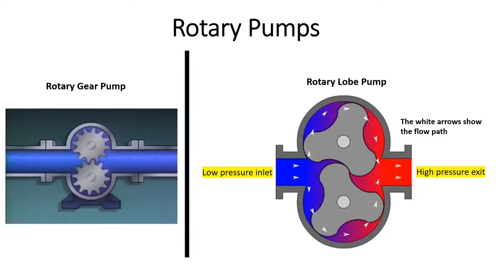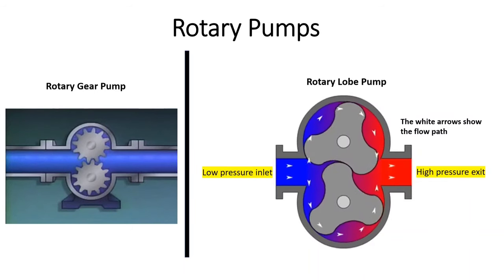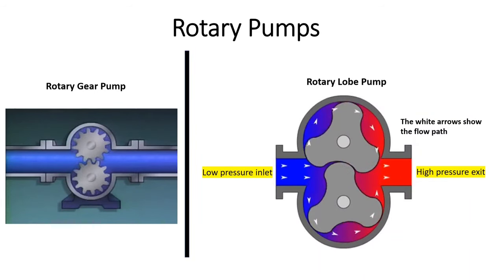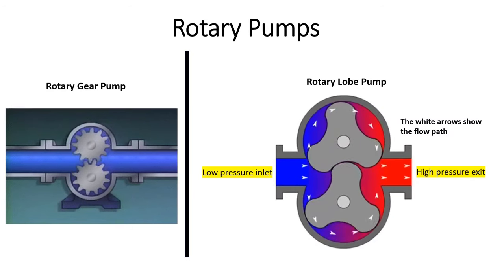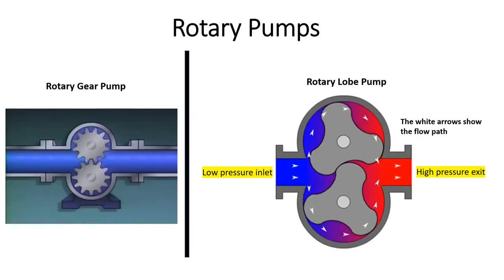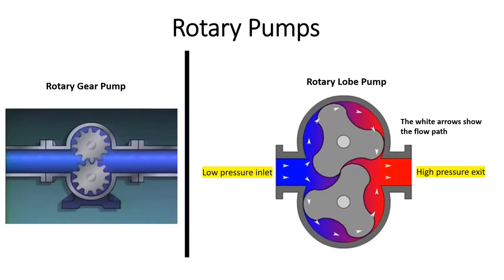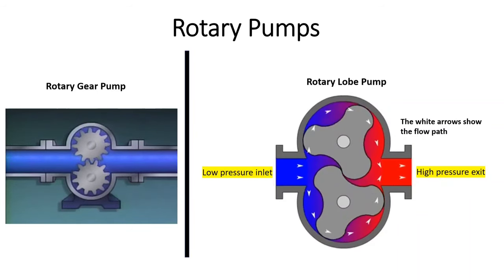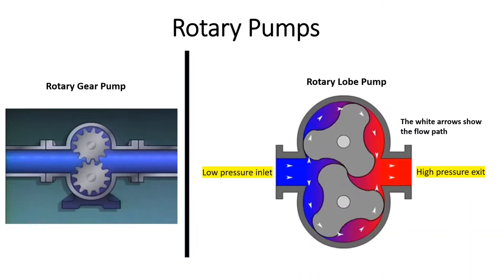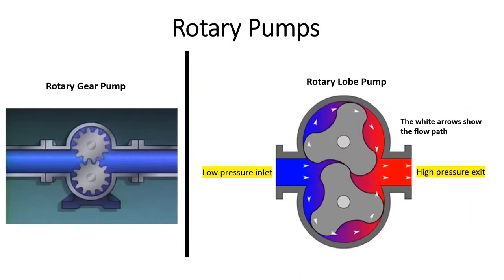Rotary pumps are another type of positive displacement pump, and can be either gear type, lobe type, or screw type. These pumps work by trapping and transporting fluid through their rotating elements. They are used in lubrication systems and fuel transfer operations due to their ability to handle viscous fluids.